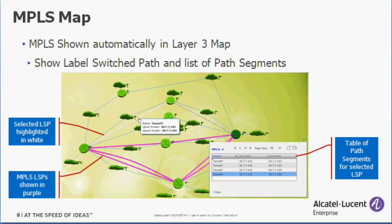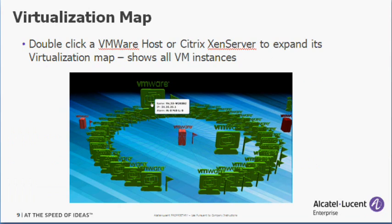The layer 3 map also has the ability to show MPLS objects such as label-switched paths and lists of path segments between devices. Map users can click on a VMware host icon or a Citrix Zen server icon to drill down to a virtualization map that expands the list of all the VM instances associated with that server.